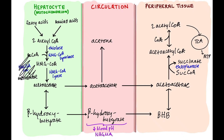The most important tissue that uses ketone bodies is the brain — the brain is going to run on ketone bodies after a prolonged fast. This is also very important in diabetes, because we're unable to bring glucose into cells. So we're going to rely on mobilization of fat stores to make ketone bodies in the liver and supply them to peripheral tissue. We're reliant on taking in ketone bodies in order to get energy, make ATP, and keep those cells alive.